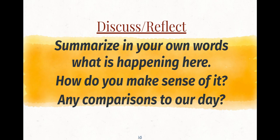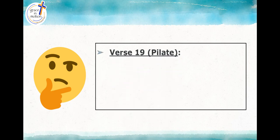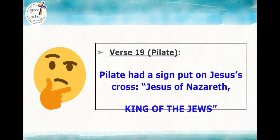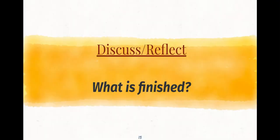The soldiers take charge of Jesus and he carried his own cross. Pilate had a sign put on the cross that read 'Jesus of Nazareth, King of the Jews' — written in Aramaic, Greek, and Latin. Jesus' mother, his aunt, and Mary Magdalene were all there at the crucifixion. Jesus tells his mother that John is now her son, and tells John that Mary is now his mother. John cared for Mary from then on.